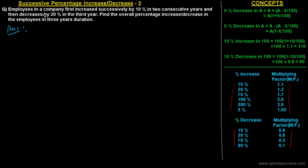First, look at this question: employees in a company first increased successively by 10 percent in two consecutive years, and then decreased by 20 percent in the third year. Find the overall percentage increase or decrease in employees over three years. We are not given the initial number of employees, just the percentage increase and decrease over three years, and we have to calculate the overall percentage change.